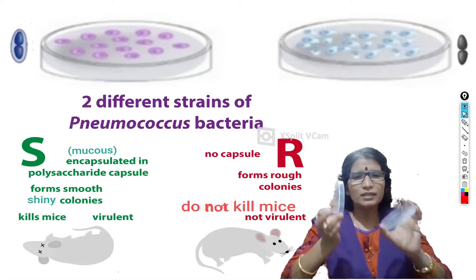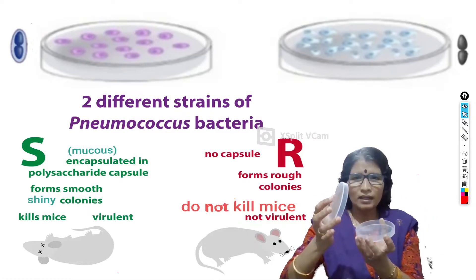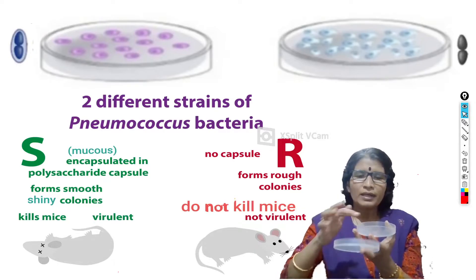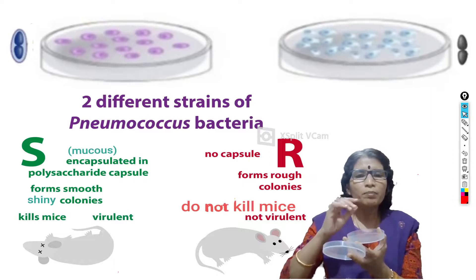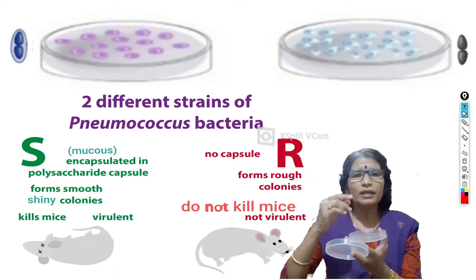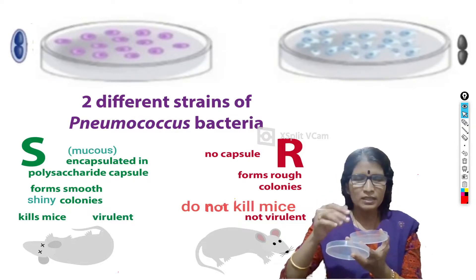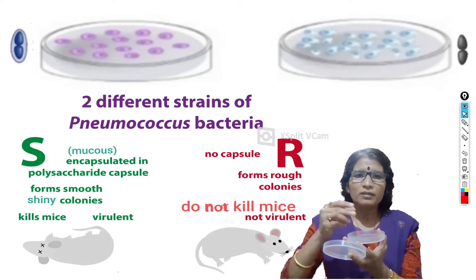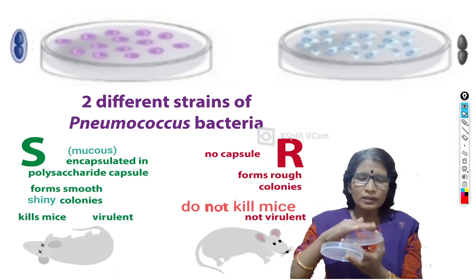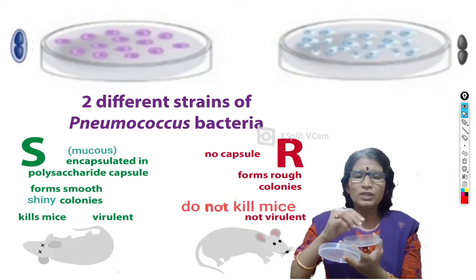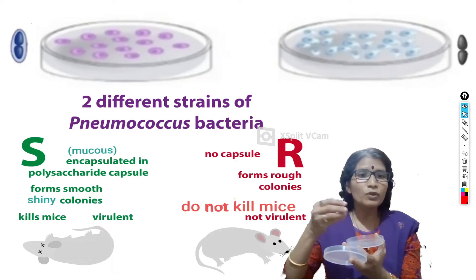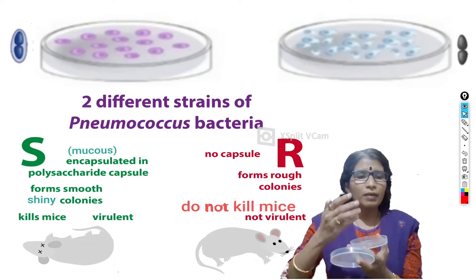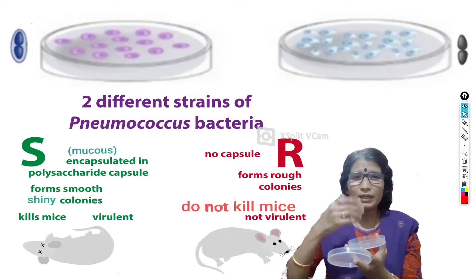A petri dish is made up of plastic or glass with two plates, one overlapping the other. In the laboratory, we first take nutrient medium in the lower plate. Nutrient medium is prepared by adding carbohydrates, amino acids, vitamins, and minerals. On this nutrient medium we place the Streptococcus pneumoniae bacteria, which absorb nutrients and multiply rapidly to form colonies.